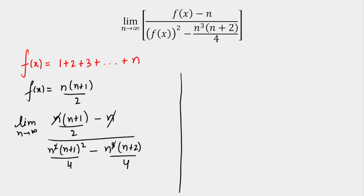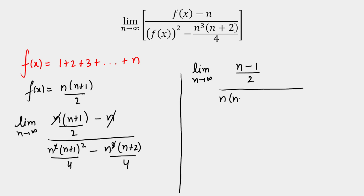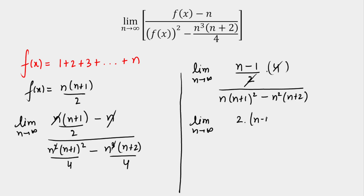We can cancel out n from the numerator terms. Taking LCM, the numerator becomes 2(n−1)/2, and the denominator after taking LCM of 4 gives n(n+1)² − n²(n+2). Opening (n+1)², the n³ terms cancel. Then the 2n² terms also cancel, leaving only n in the denominator. So after simplification we get the limit as n → ∞ of 2(n−1)/n.